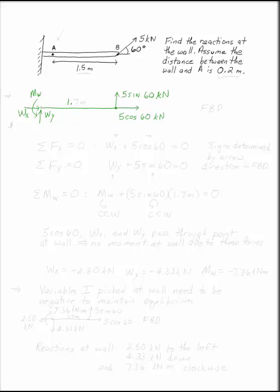Now this distance is 1.7 meters because it's 1.5 meters to point A, but it's 0.2 meters between the wall and A. There's a real point in putting A on your diagram.